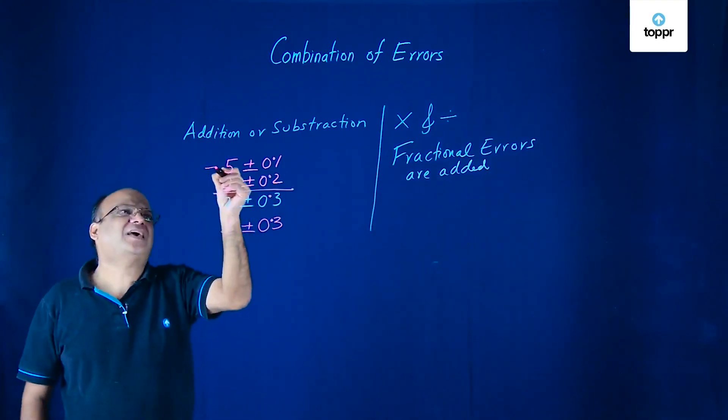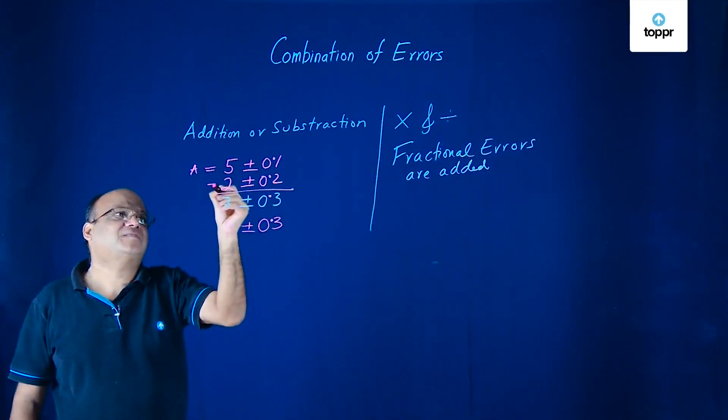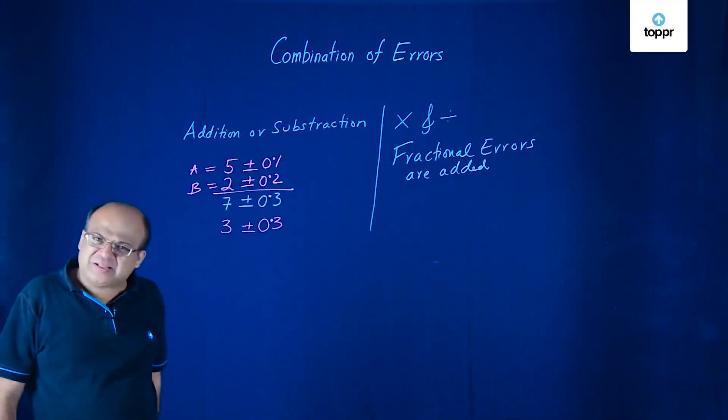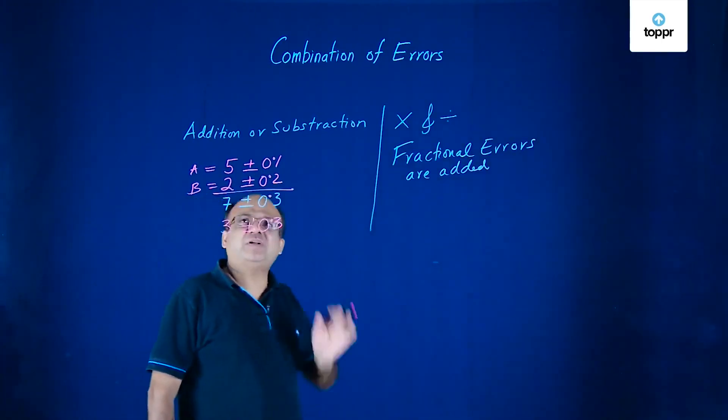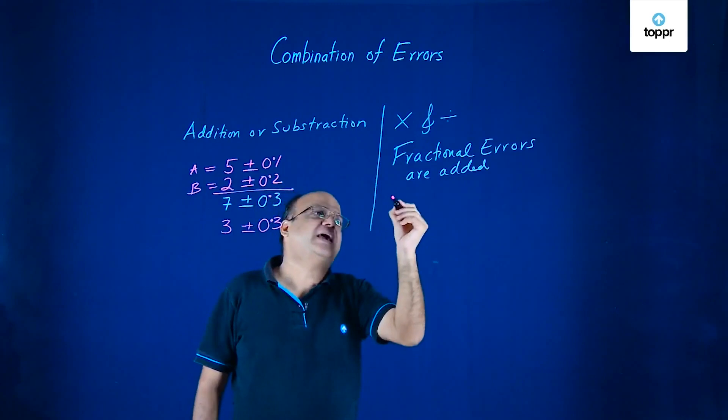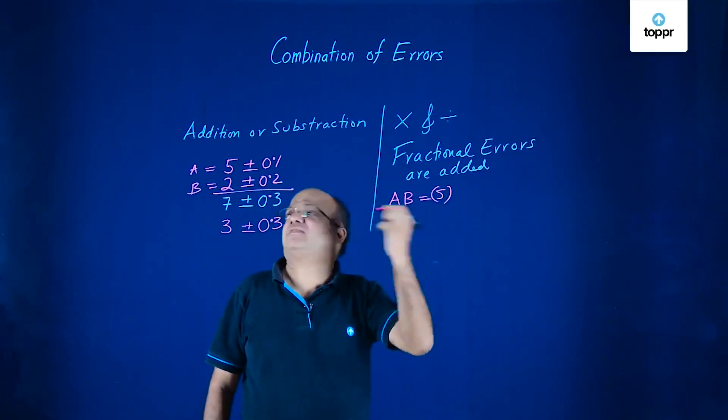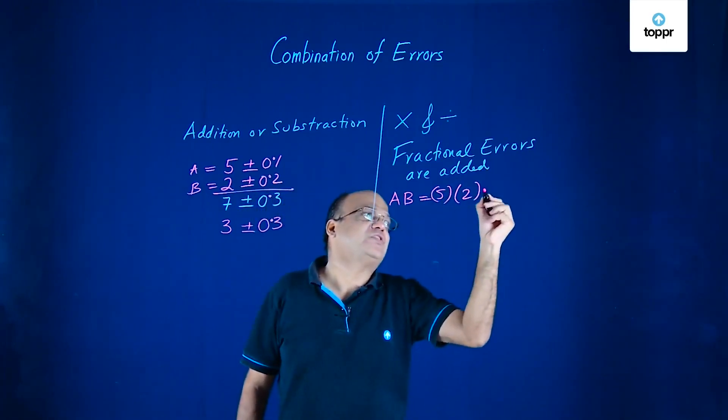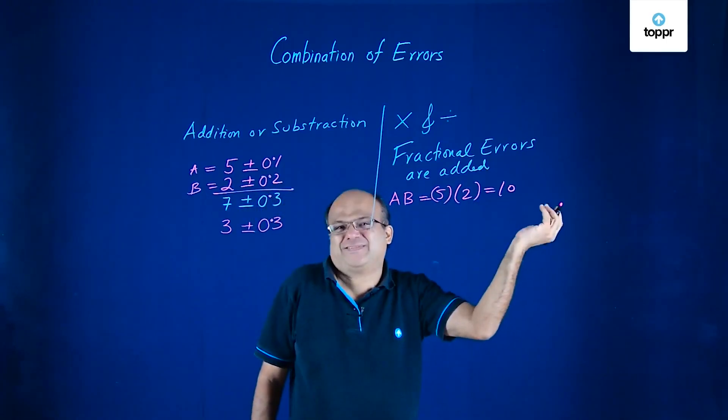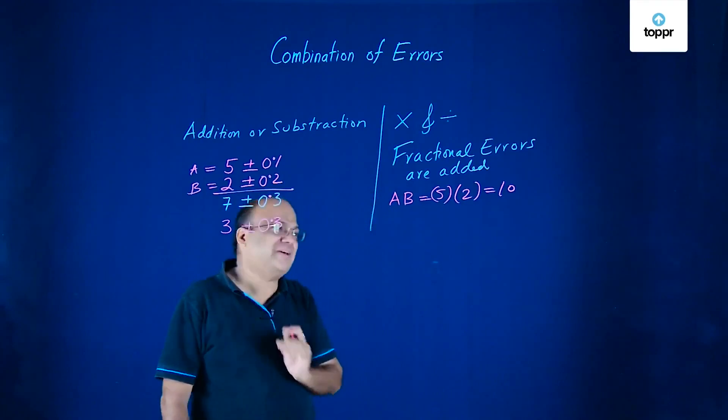Suppose this is A, this is B. Now to multiply them. So first we will multiply them without errors. A into B is 5. A is 5 and B is 2. So 10. This is without errors. I am not bothered about errors right now.